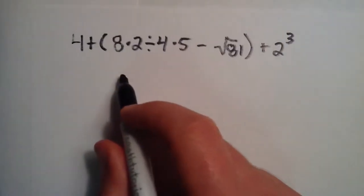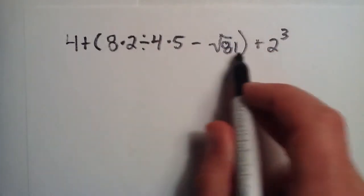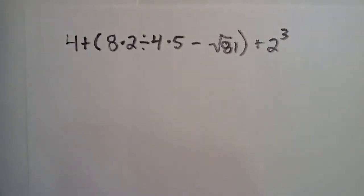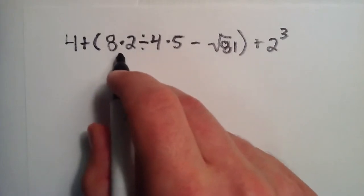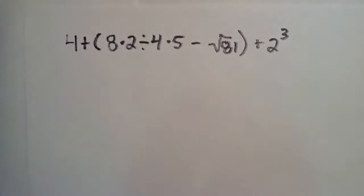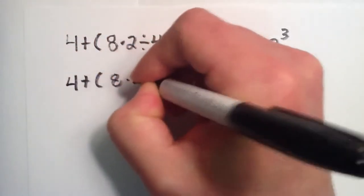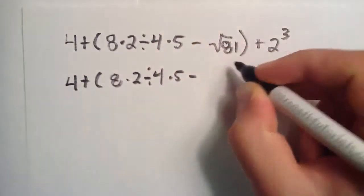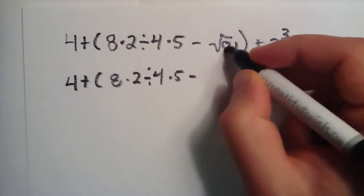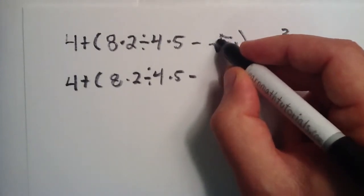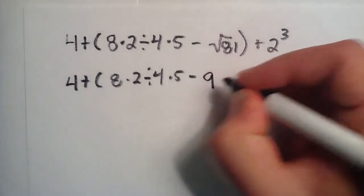So the most important thing here is number 1 on our list. We have a grouping with parentheses, so we need to do everything in the parentheses before we do anything else. Now inside the parentheses, we have a root, we have some multiplication and division, and so the highest priority is the root. So let's take care of that first. Square root 81 is 9. 9 times 9 equals 81, so square root 81 is 9.